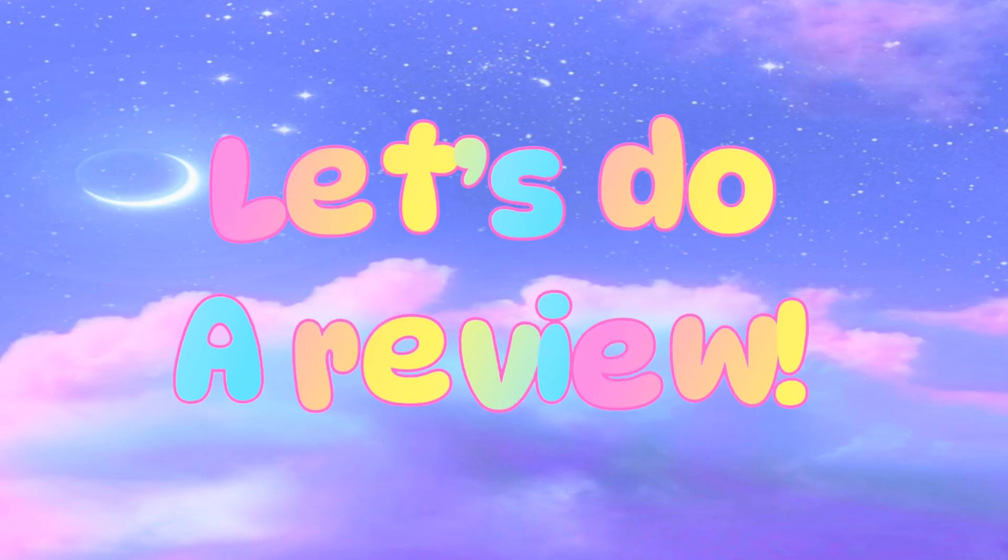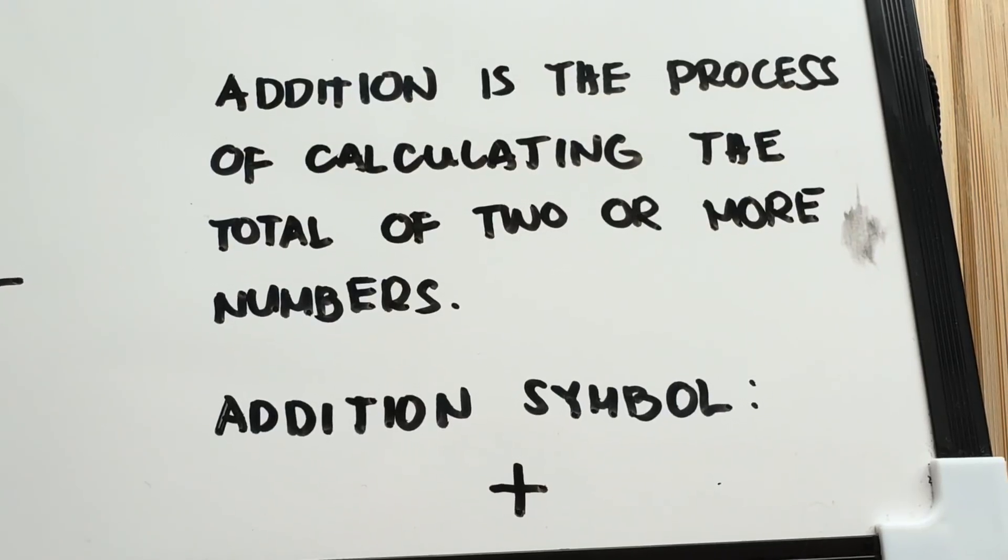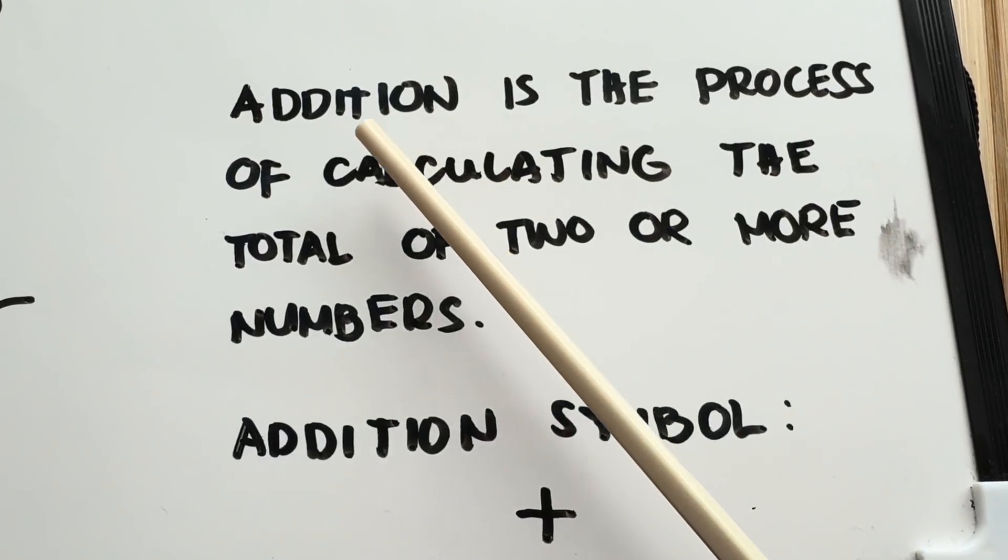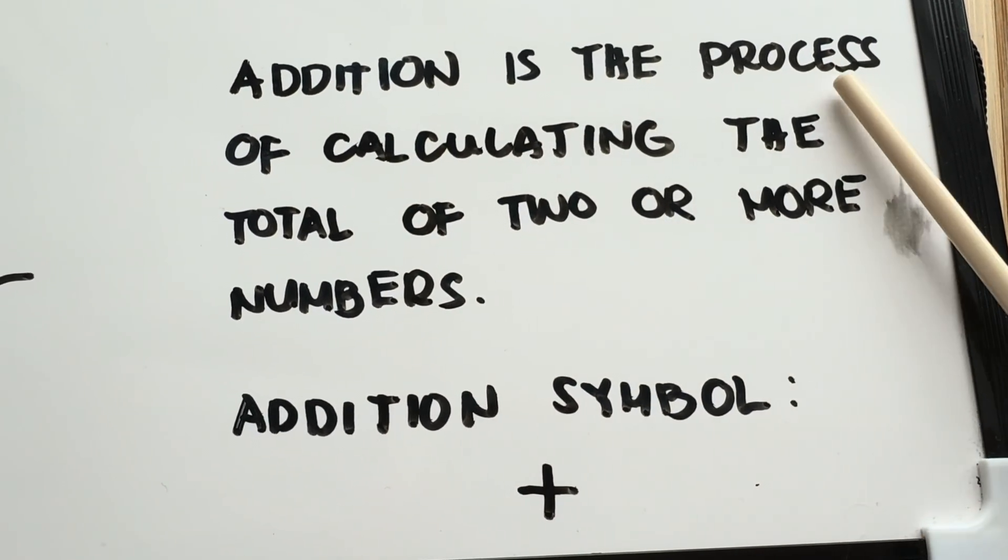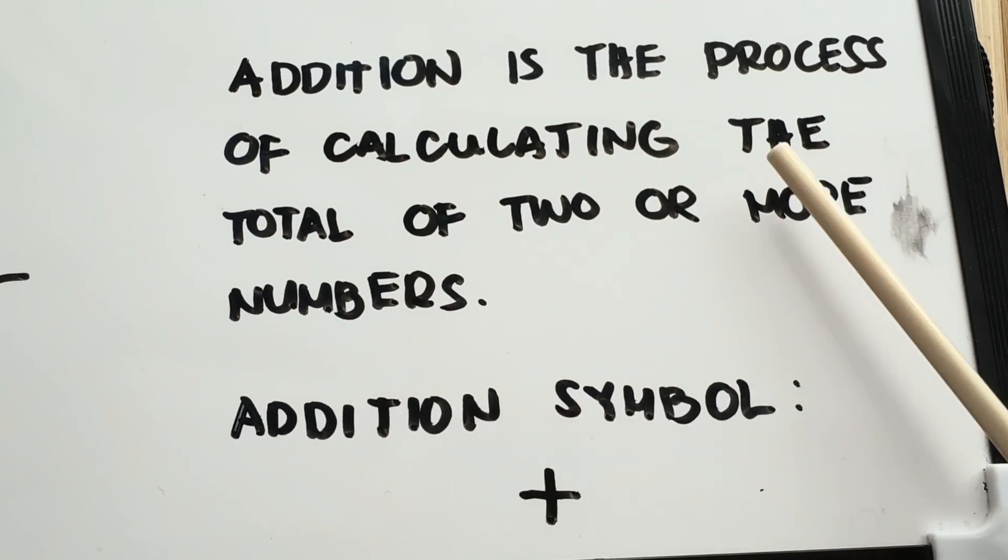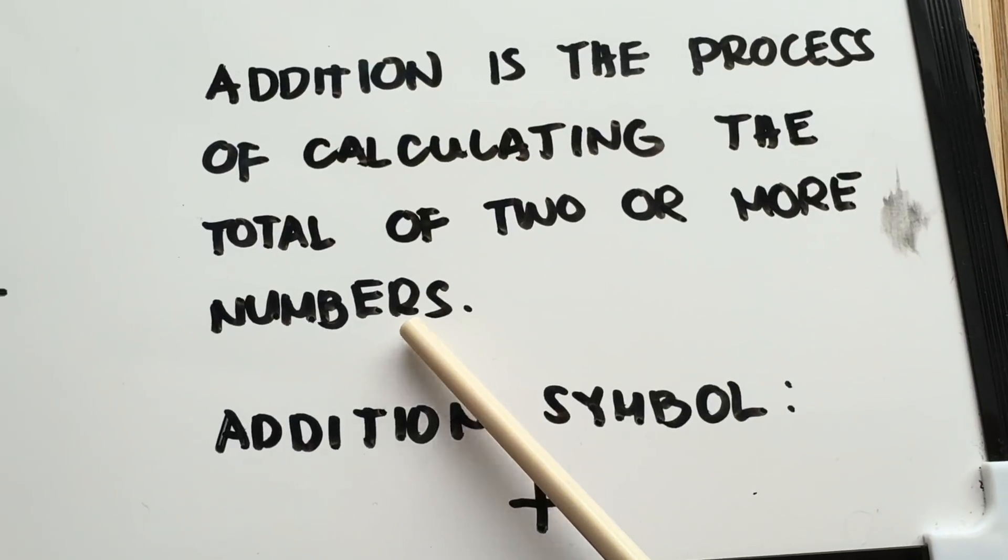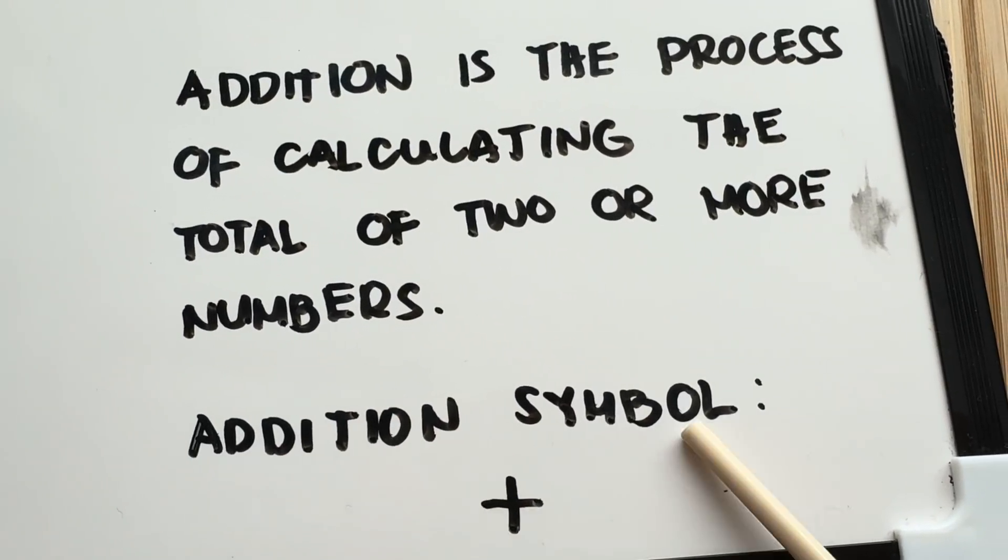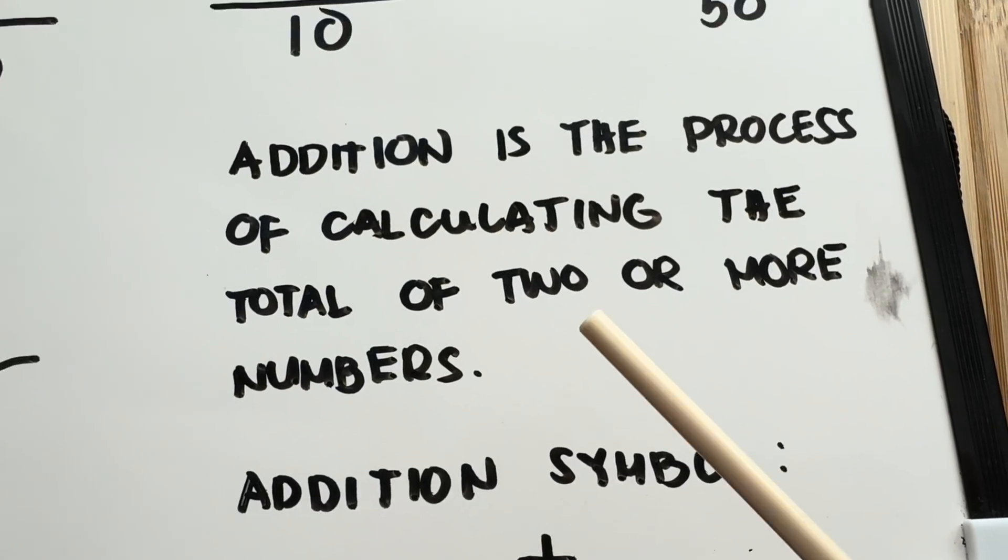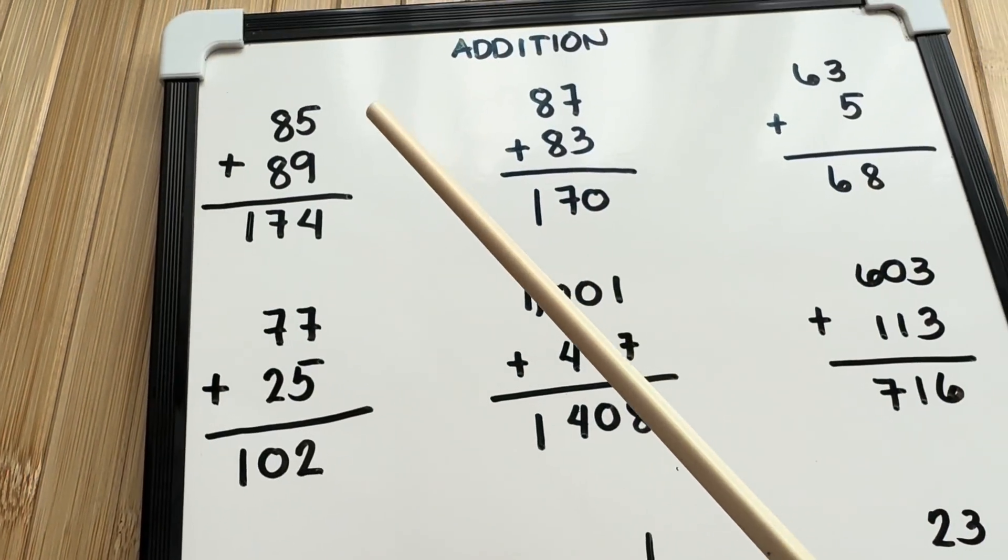Now, join me and let's do a review. Let's define first what is addition. Addition is the process of calculating the total of 2 or more numbers. This is the addition symbol. Now, let's try to add numbers.